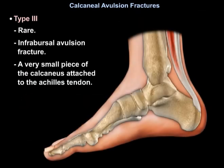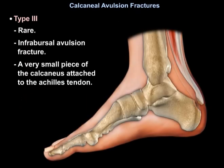Type 3 avulsion fracture of the calcaneus is rare. It is an infrabursal avulsion fracture — a very small piece of the calcaneus attached to the Achilles tendon.